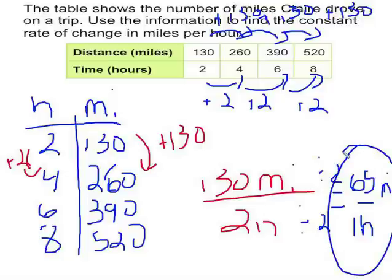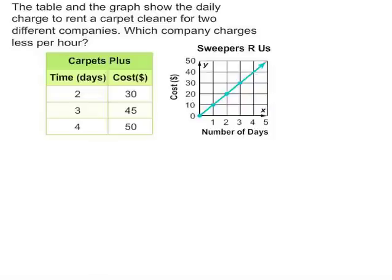So I know that the number of miles that Claire travels is 65 miles per hour. Alright, so another example where you're comparing rates of change. So we know that the tables here and the graph show the daily charge to rent a carpet cleaner for 2 different companies. We wanna know which company charges less per hour. So I'm gonna give you a 10 second head start, but feel free to pause.